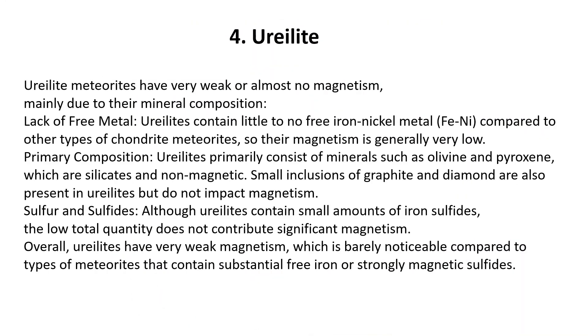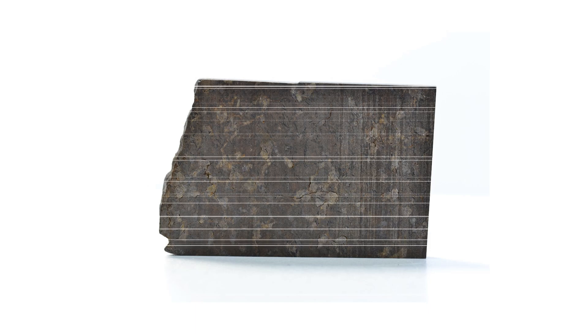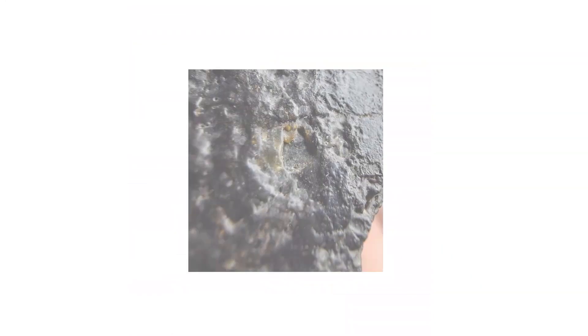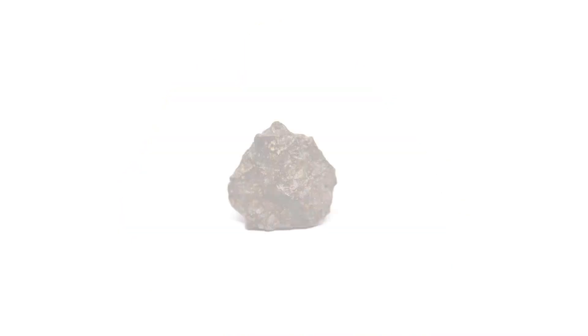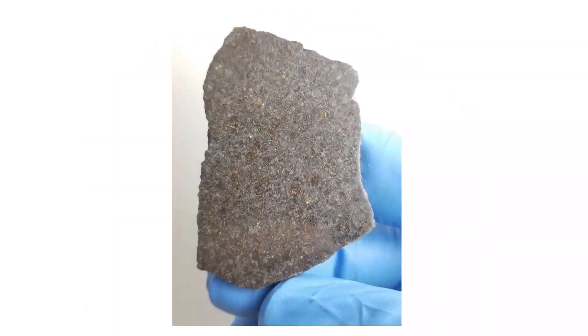Ureilite meteorites have very weak or almost no magnetism, mainly due to their mineral composition. Lack of free metal: Ureilites contain little to no free iron-nickel metal compared to other types of chondrite meteorites, so their magnetism is generally very low. Primary composition: Ureilites primarily consist of minerals such as olivine and pyroxene, which are silicates and non-magnetic. Small inclusions of graphite and diamond are also present in Ureilites, but do not impact magnetism. Although Ureilites contain small amounts of iron sulfides, the low total quantity does not contribute significant magnetism. Overall, Ureilites have very weak magnetism, barely noticeable compared to meteorites that contain substantial free iron or strongly magnetic sulfides.